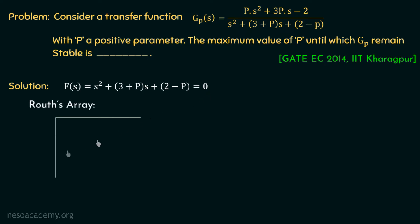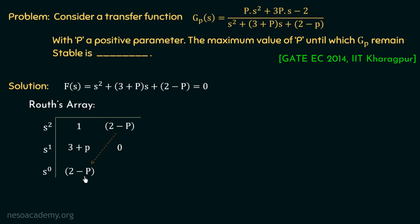Now let us form the Routh array. The first two rows are formed from the coefficients of the characteristic equation: s² row has 1 and (2 − P); s¹ row has (3 + P) and 0. The s⁰ row is the last row. There is an important shortcut: whenever the second element of a row is 0, we can directly copy the constant term (2 − P) to the next row, because the (3 + P) terms cancel out in the calculation.